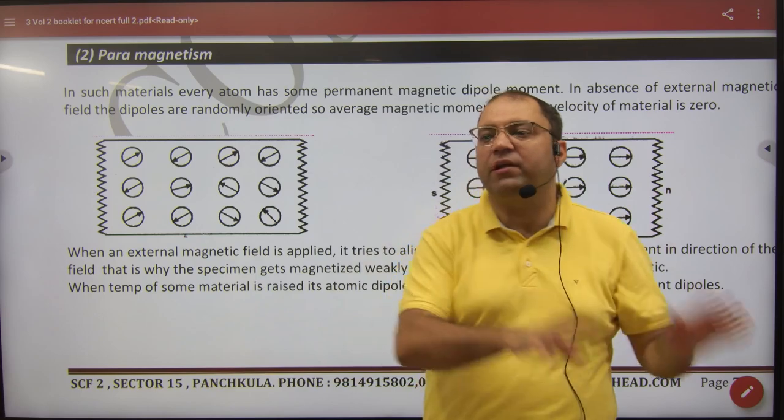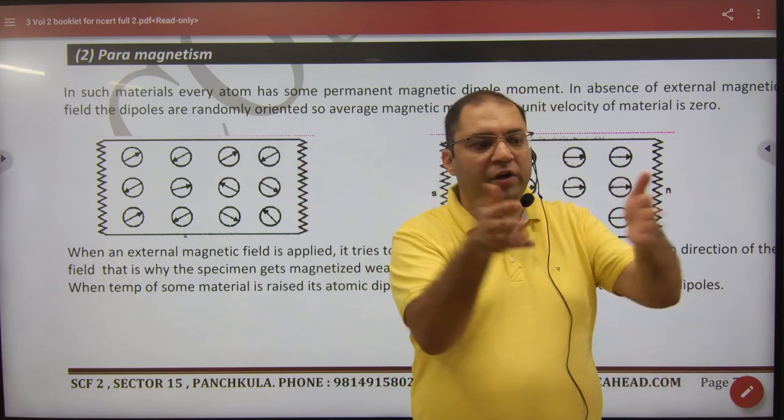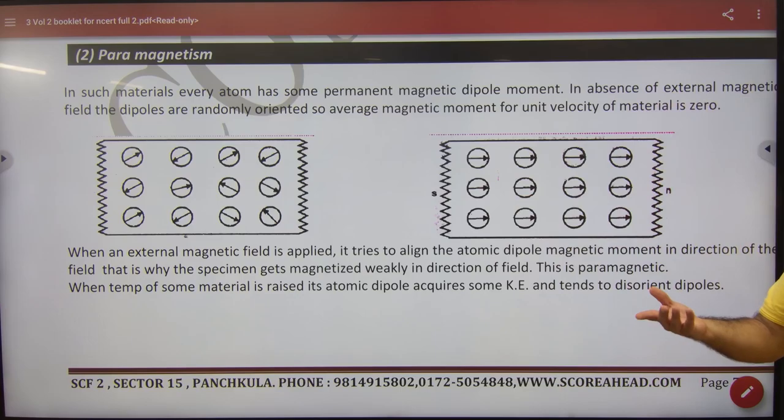But when it is in a magnetic field, what happens? All align in one direction and they will start acting like a magnet. So this is your paramagnetism.